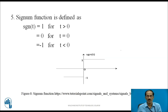The signum function, sgn(t), is defined as: 1 for t > 0, 0 for t = 0, and −1 for t < 0. From 0 to plus infinity its value is constant at 1. At t = 0 it is 0. Along the negative side, from minus infinity up to 0, its value is always −1.